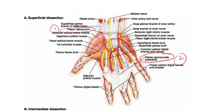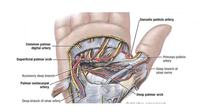Here we can identify the palmar digital branches coming from the arterial arch. The first palmar digital branch supplies the ulnar border of the little finger, whereas the rest of the digital branches supply the adjacent sides of the fingers. A closer view of the dissected picture shows the branches of the superficial palmar arch — the palmar digital branches reaching the web spaces.